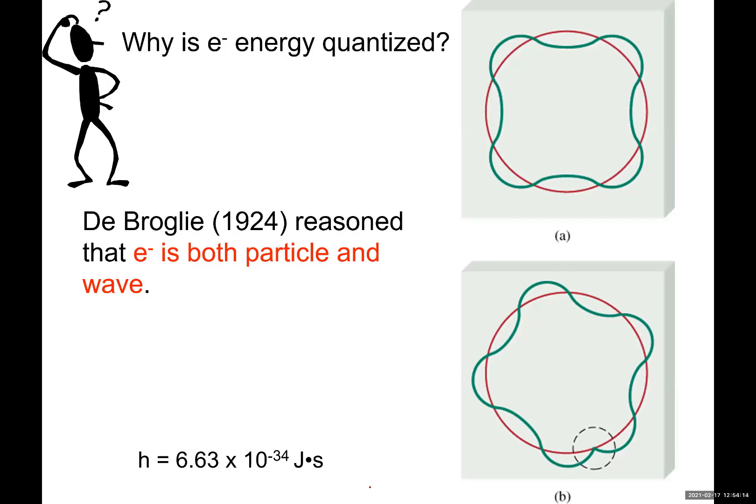So now we want to know, scientists after 1930 are trying to understand why energy is quantized. Why electrons cannot accept any arbitrary amount of energy. Why there are certain packets of energy they can accept.